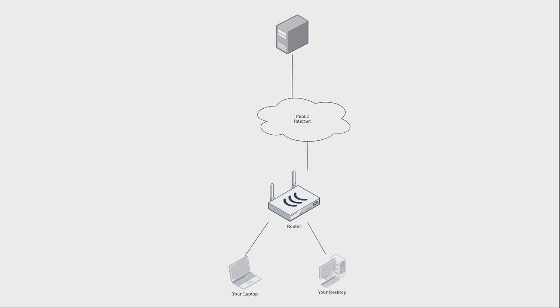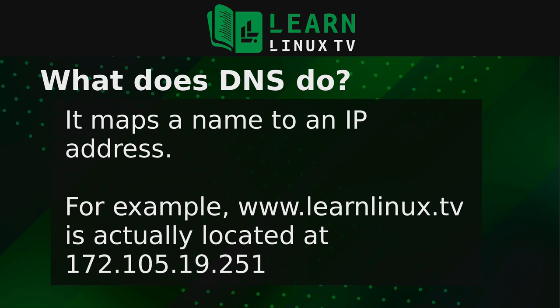In order to understand this diagram and what we're trying to achieve, we need some baseline understanding of what DNS is. Without going into too much detail — this isn't a DNS tutorial — the basic idea is that DNS maps a name to an IP address. For example, the website for this channel, LearnLinux.tv, is actually located at 172.105.19.251. You can certainly try to memorize that IP address, but it's definitely a lot easier to memorize LearnLinux.tv.